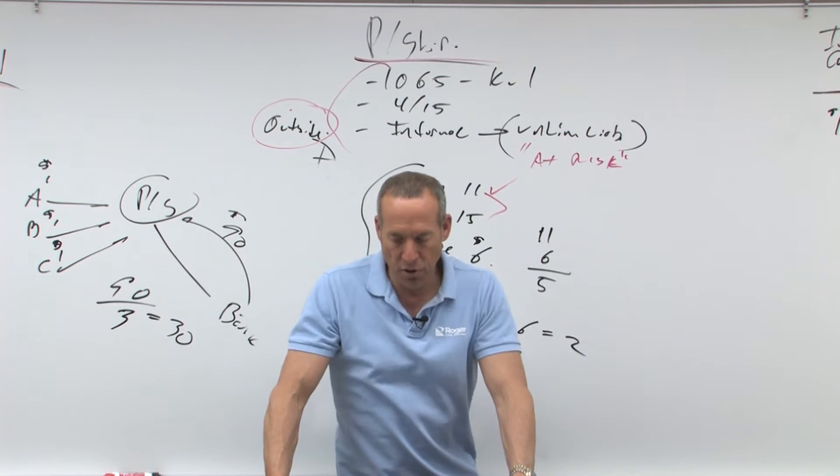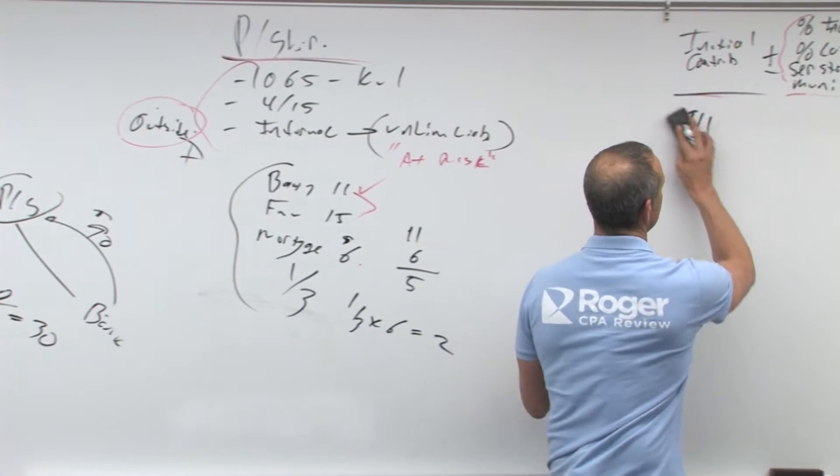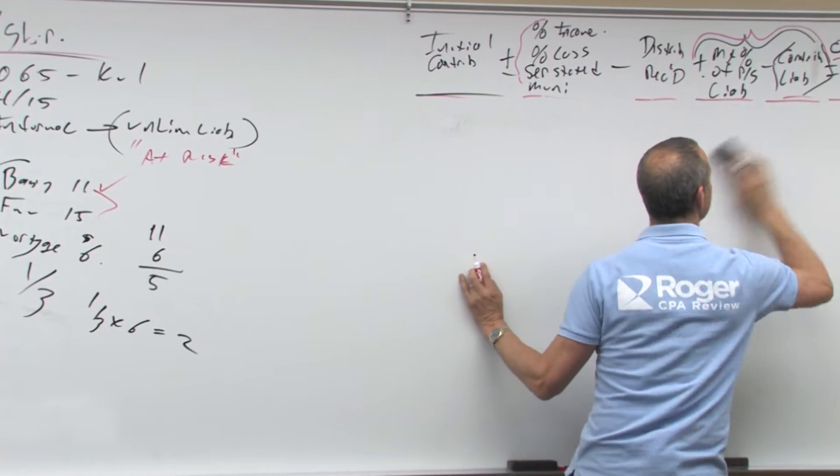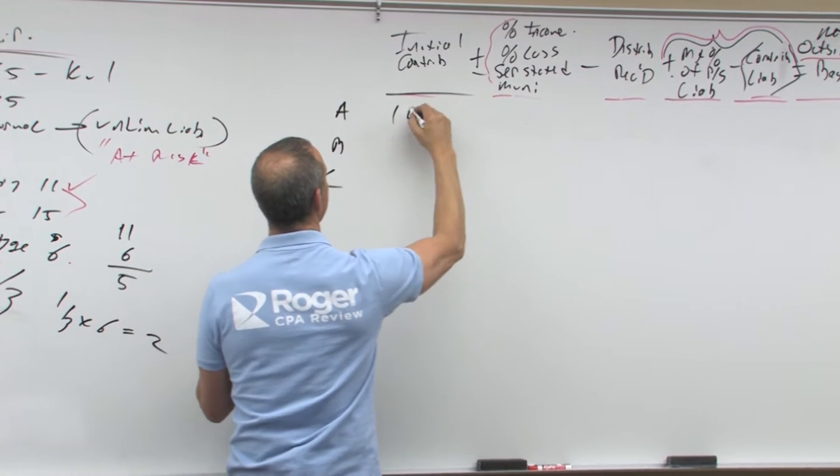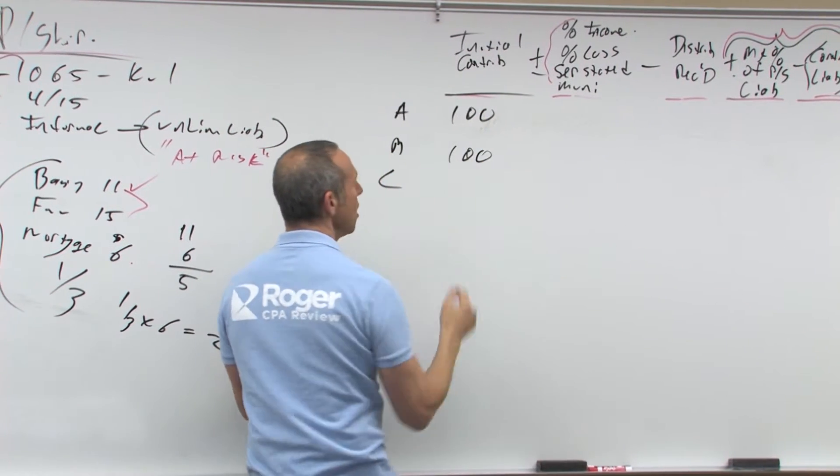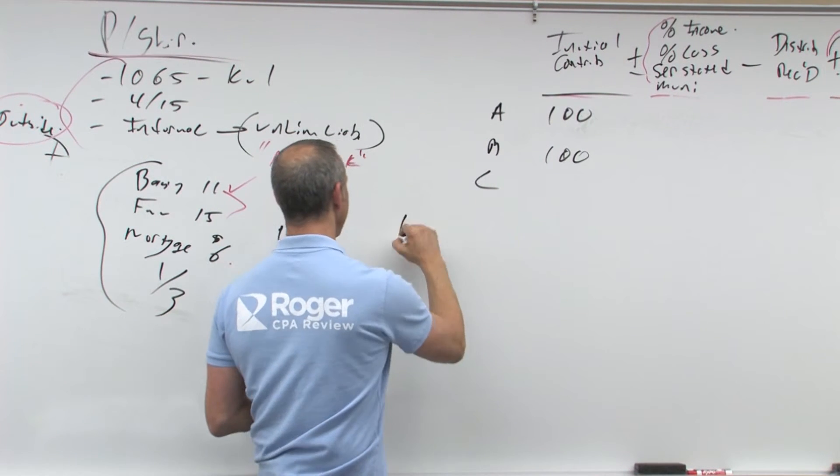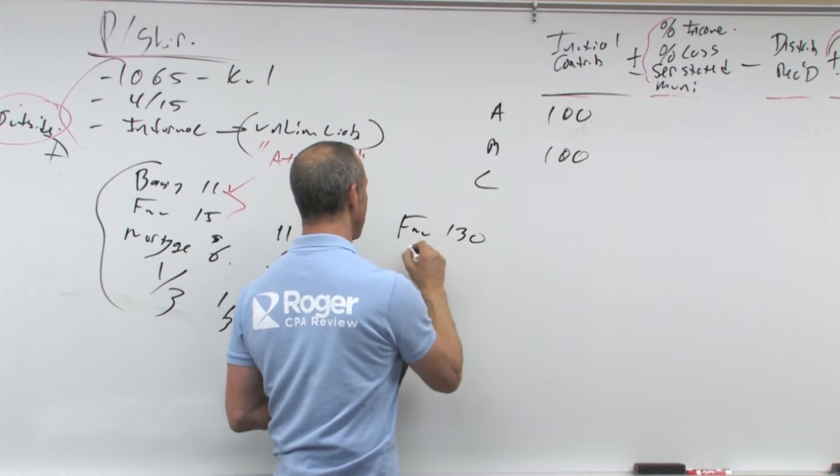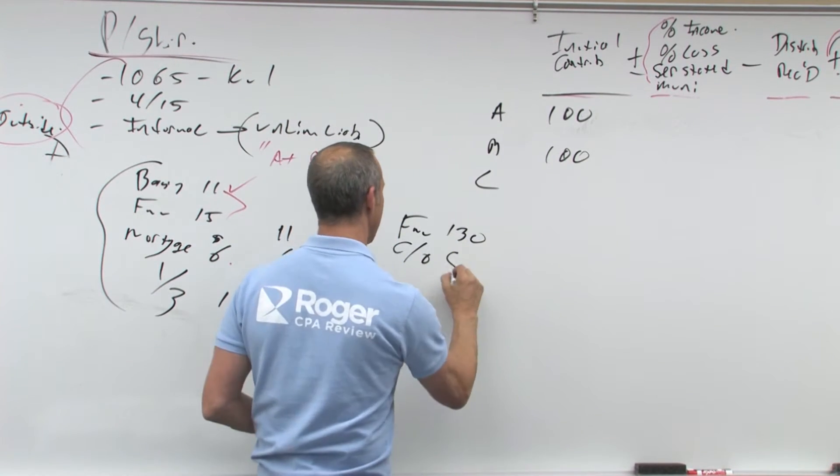So what we need to do is figure out what their basis is. Let's come over here, let's set this up again. We've got partners A, partner B, partner C. He's got $100 cash, $100 cash. This guy puts in property. They told us that the property has a fair market value of 130.